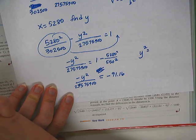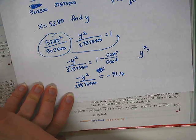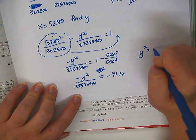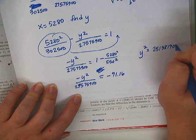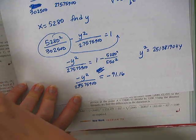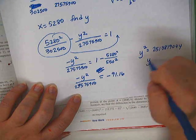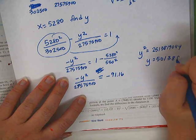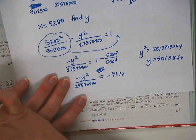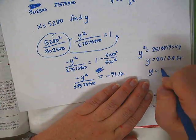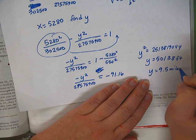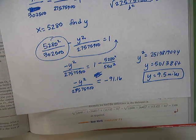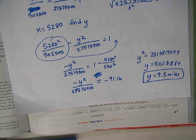Okay, now I'm going to cross multiply this with this. Get rid of the negatives, because if there's a negative on both sides, we don't need it. So y squared will equal 27575900 times 91.16. So that gives us 2513819044. And we square root that number, and we get y equals 5138, and that's feet. So then if we want to take that and divide it by 5280, that would be 9.5 miles.